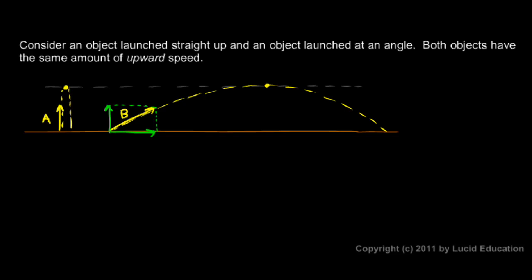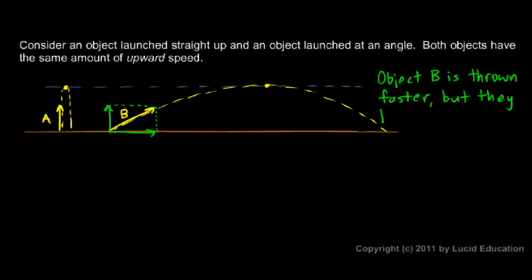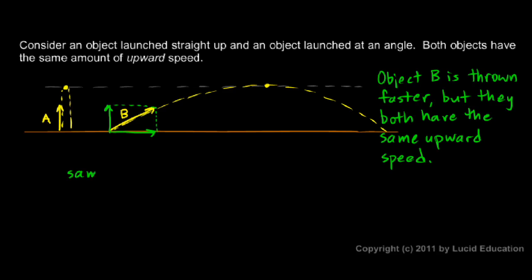Let's take some notes. Object B is thrown faster — you can see that because the vector itself is longer. But they both have the same upward speed. Therefore, they reach the same height and they spend the same amount of time in the air. The horizontal and vertical motion don't affect each other. The fact that object B is moving to the right really fast doesn't make it stay in the air any longer — it's only the vertical part of the speed that matters.